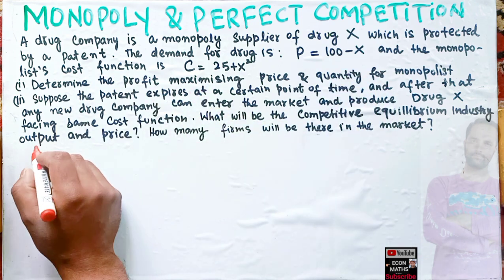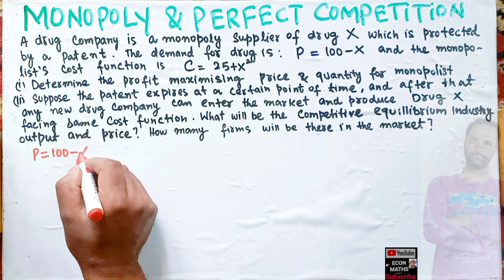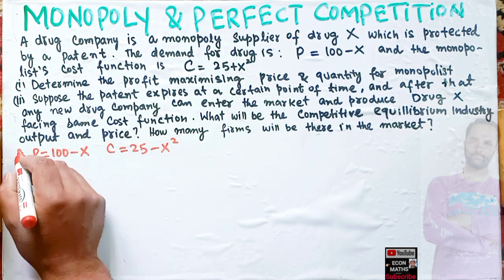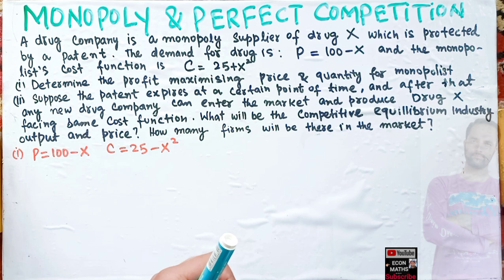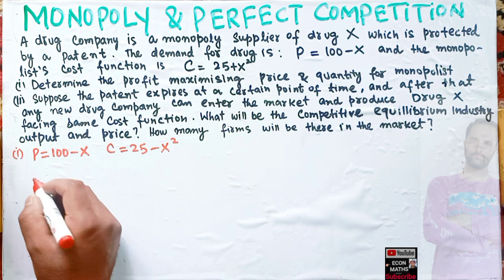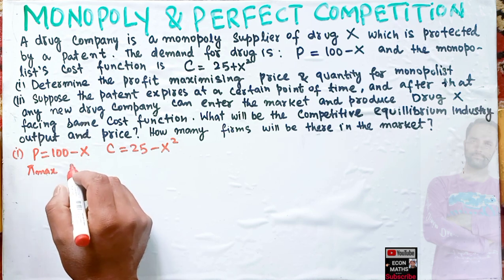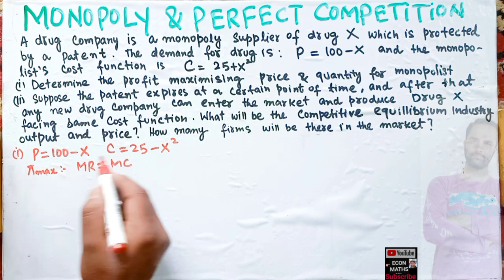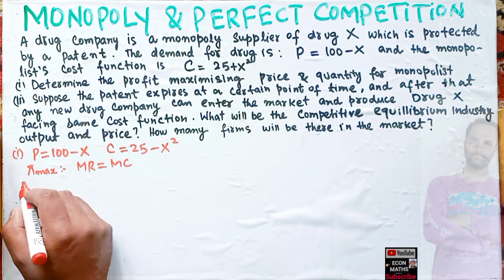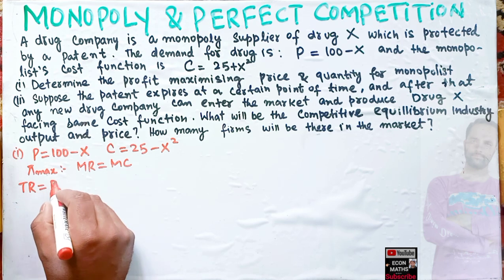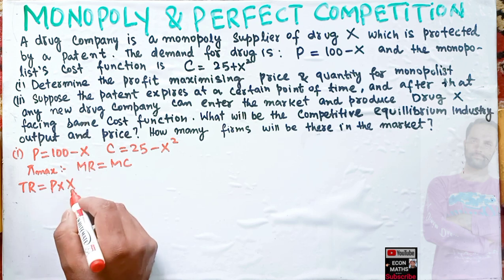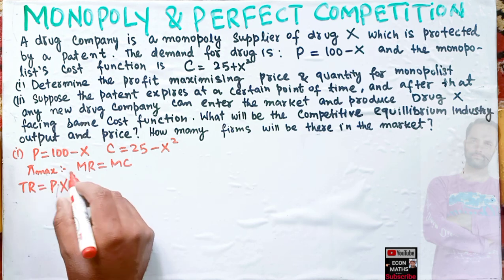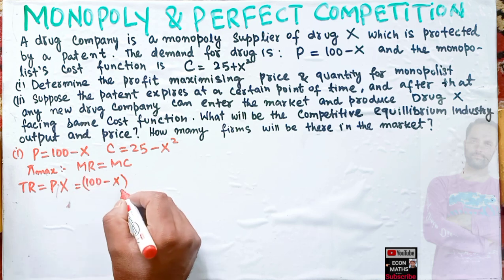So we have the demand function p = 100 - x and cost function c = 25 + x². We are solving for the monopolist equilibrium price and quantity first. For the monopolist, the profit-maximizing condition is marginal revenue should equal marginal cost. To find marginal revenue, we first find total revenue, which is price times quantity.